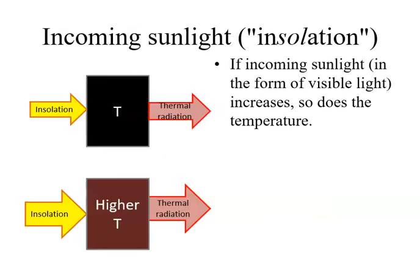Previously, you've learned that the greater the incoming sunlight, the more energy gets absorbed, the surface heats up more, until it achieves thermal equilibrium. In the simplest example, this assumes all the incoming sunlight gets absorbed.